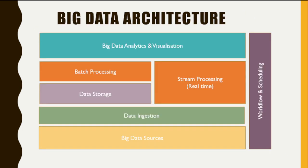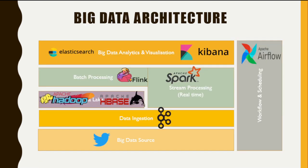Looking at the big data architectures explained in the previous modules, here is the final big data architecture. We have Kibana and Elasticsearch, Spark and Flink, HBase and Hadoop as the data lake, Kafka for data ingestion, Twitter as the data source, and Airflow for workflow management and scheduling.